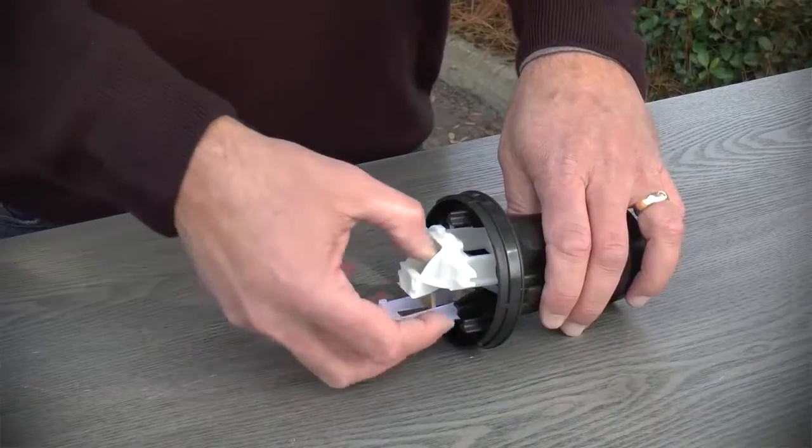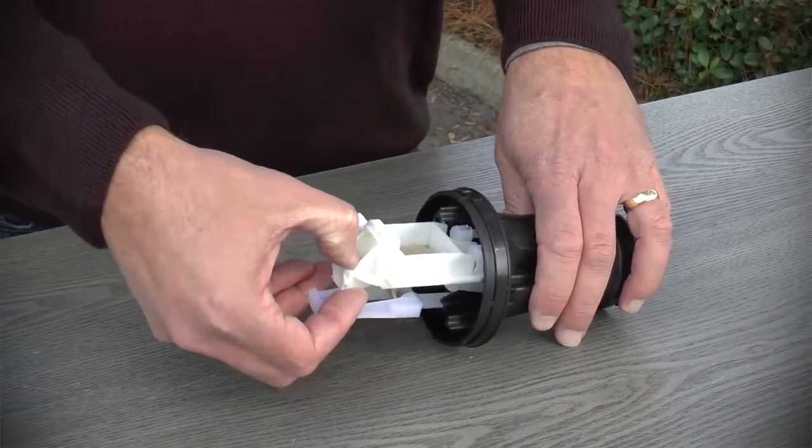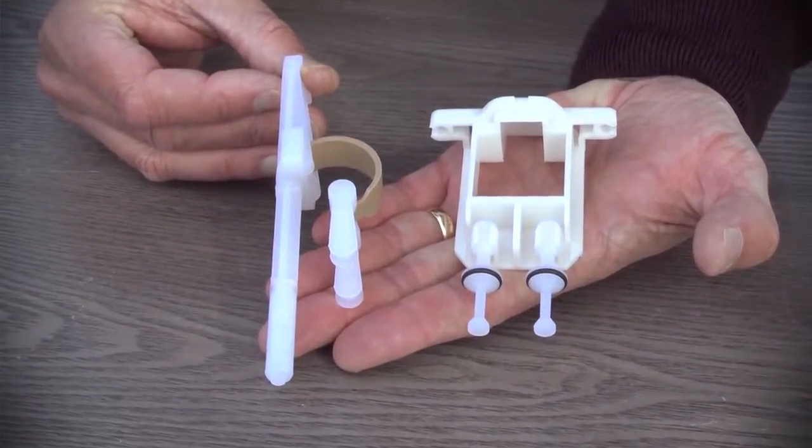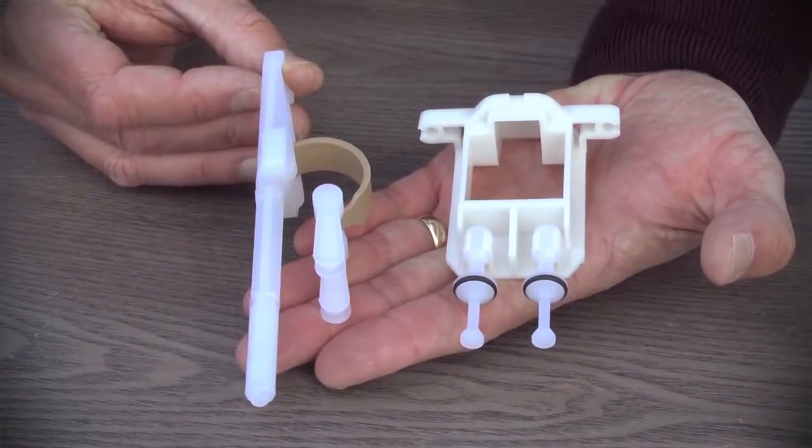Now, grasp the top of the white plastic parts of the mechanism and lift straight up. You now have two sub-assemblies: the push rod and valve support frame.